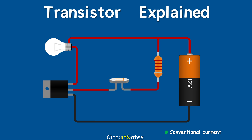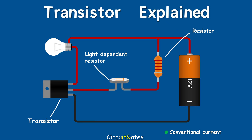In this circuit, a transistor is used to switch on and off the light bulb. The control path is connected to a light-dependent resistor as a sensing device that triggers current flowing in the control path. The control path also contains a resistor with very high resistance that allows only a very small amount of current flow, as the control path is connected to a high voltage source where the power path is also connected.